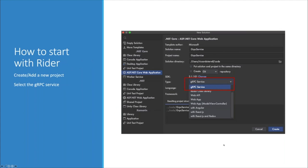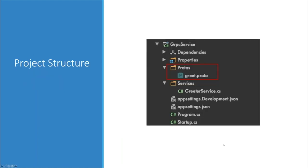Microsoft collaborated extensively with Google to make it easy to integrate gRPC into .NET Core projects like ASP.NET Core. There are already available templates in IDEs like Rider to start creating gRPC projects, with the constraint of using .NET Core. When you create a gRPC service, the project structure is quite familiar — similar to an ASP.NET project structure — with the addition of a Protos folder containing all the proto files and references to the underlying gRPC libraries and tooling.